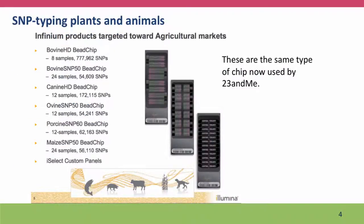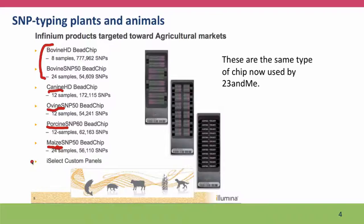SNP typing is now being extended to a lot of other species as well. These are the same kinds of SNP typing chips that are used for human SNP typing, for instance by 23andMe. We've got chips for typing cattle with lots of SNPs, but only a small number of samples; more samples, fewer SNPs for typing dogs, for typing ovine — that's sheep — porcine, which is pigs, and maize — for you Americans, maize is corn. All of these have very important, commercially extremely important breeding programs, and the SNP typing chips help improve the control of what's happening in the breeding program.